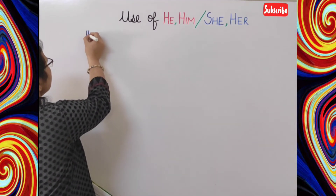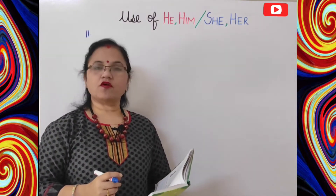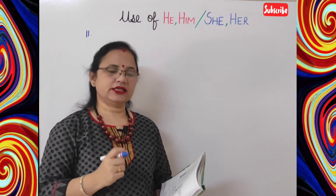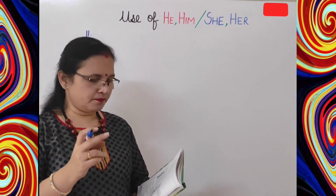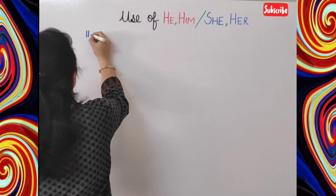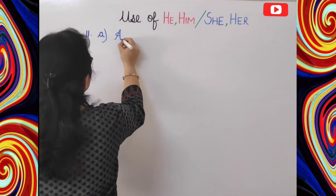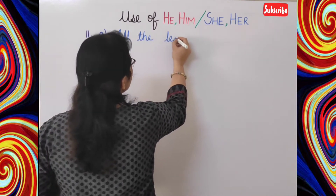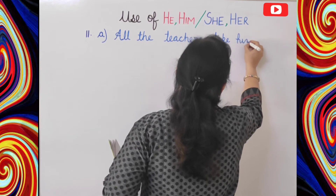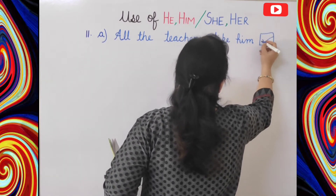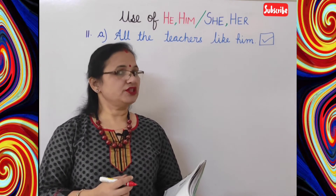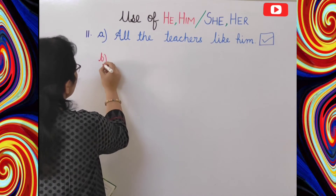Students, next exercise: tick the correct sentence from the following pairs of sentences. Two sentences are given; out of them one is correct — you have to put a tick in front of the correct sentence. First: 'all the teachers like him' or 'all the teachers like he' — the first one is correct: all the teachers like him. Next: 'she is my best friend' or 'her is my best friend' — she is my best friend is correct.